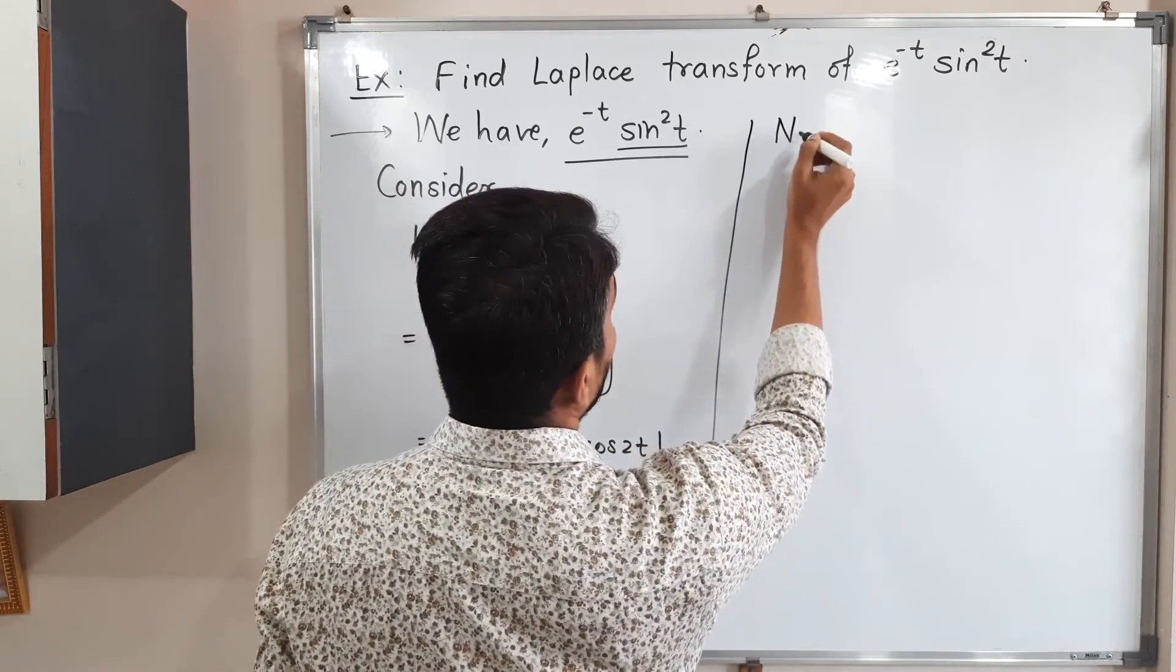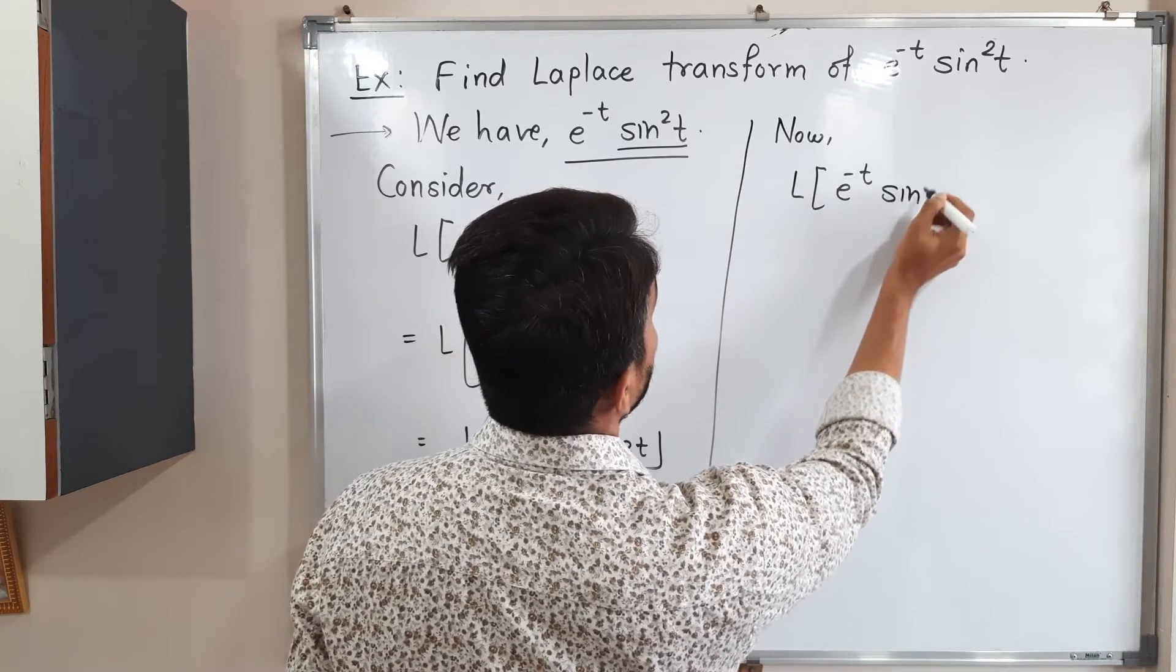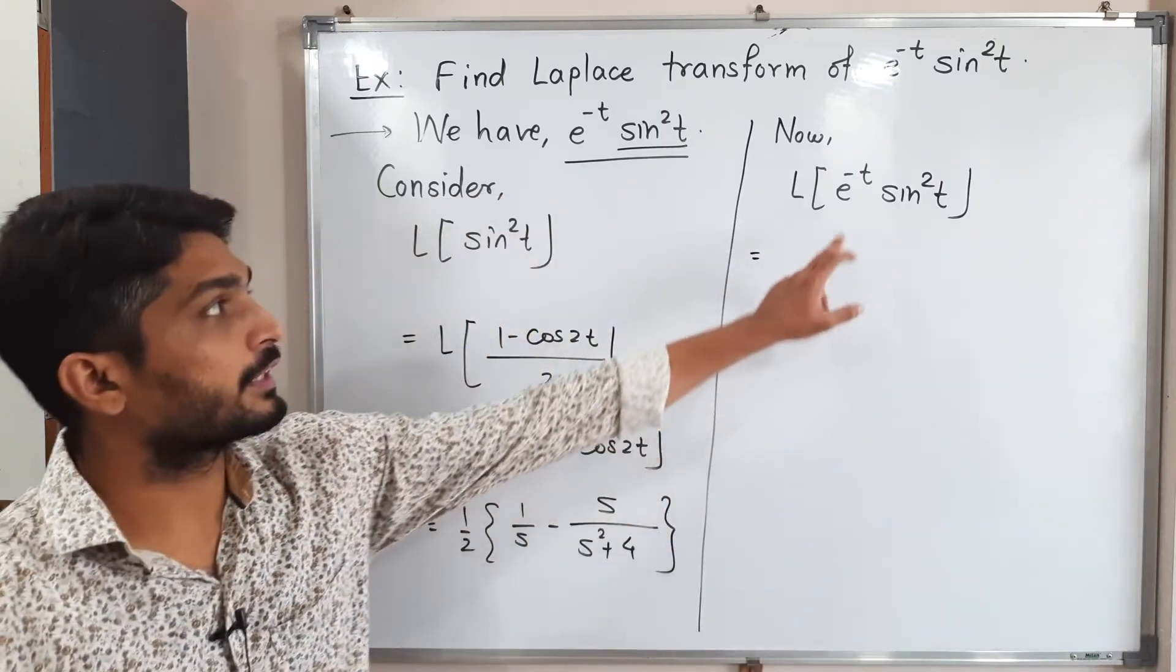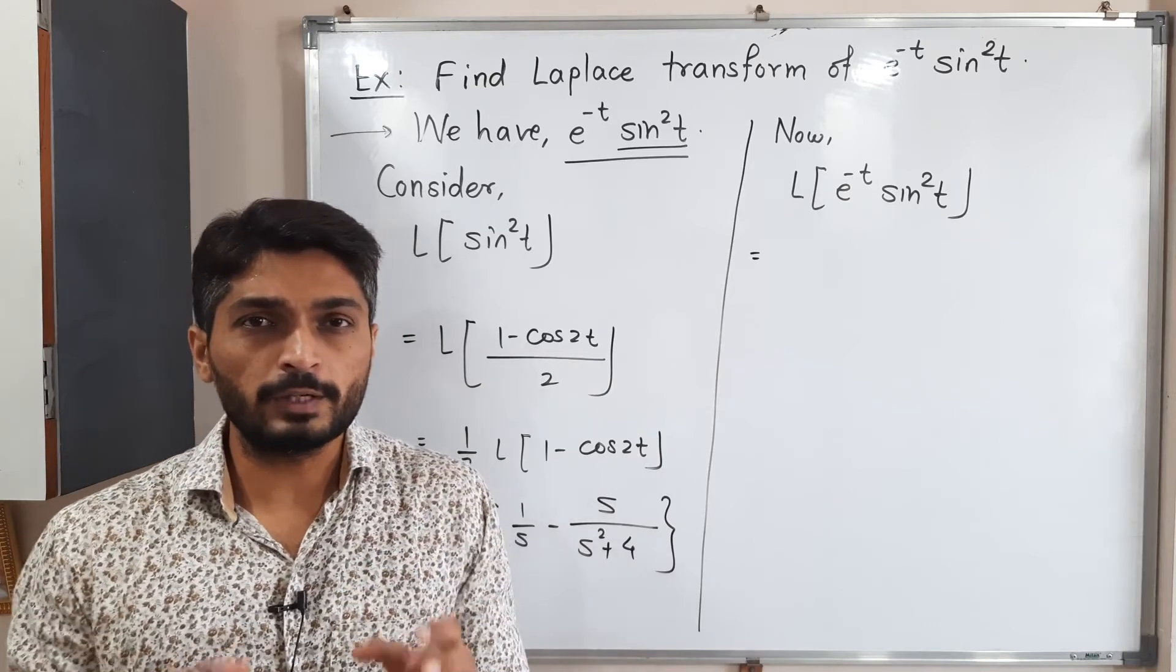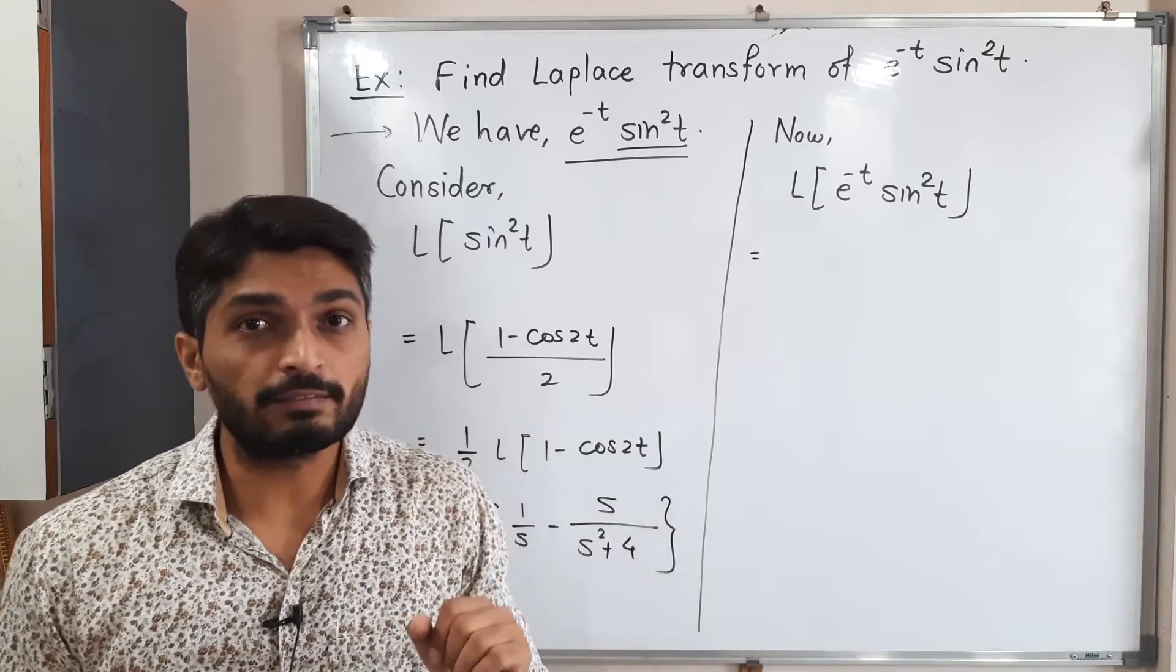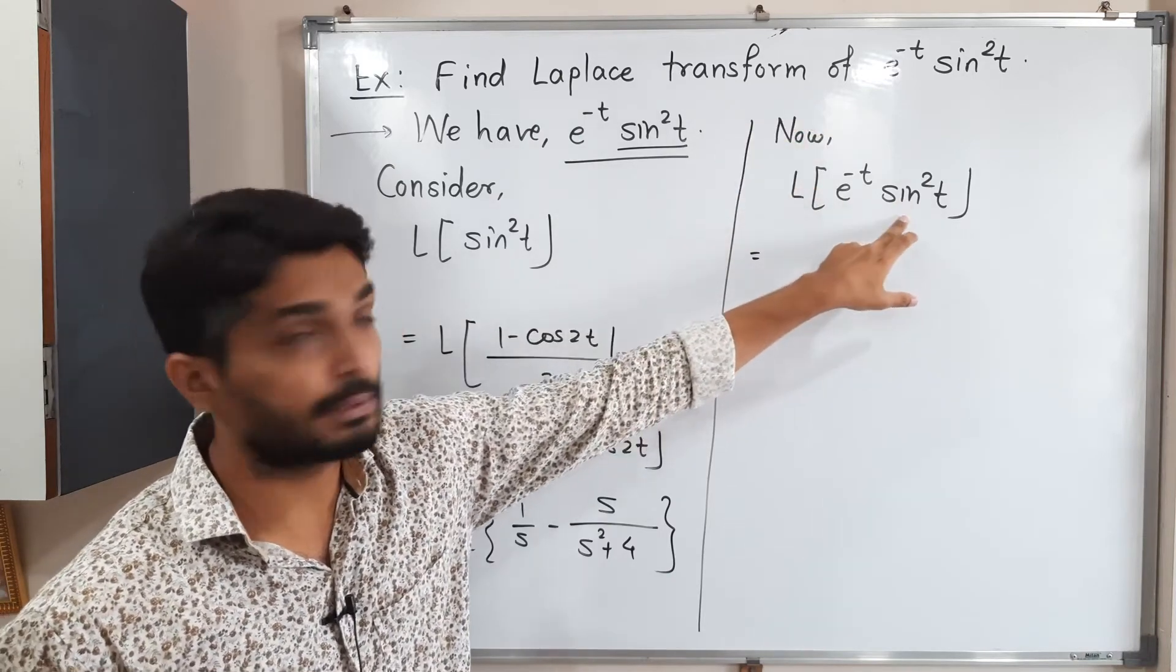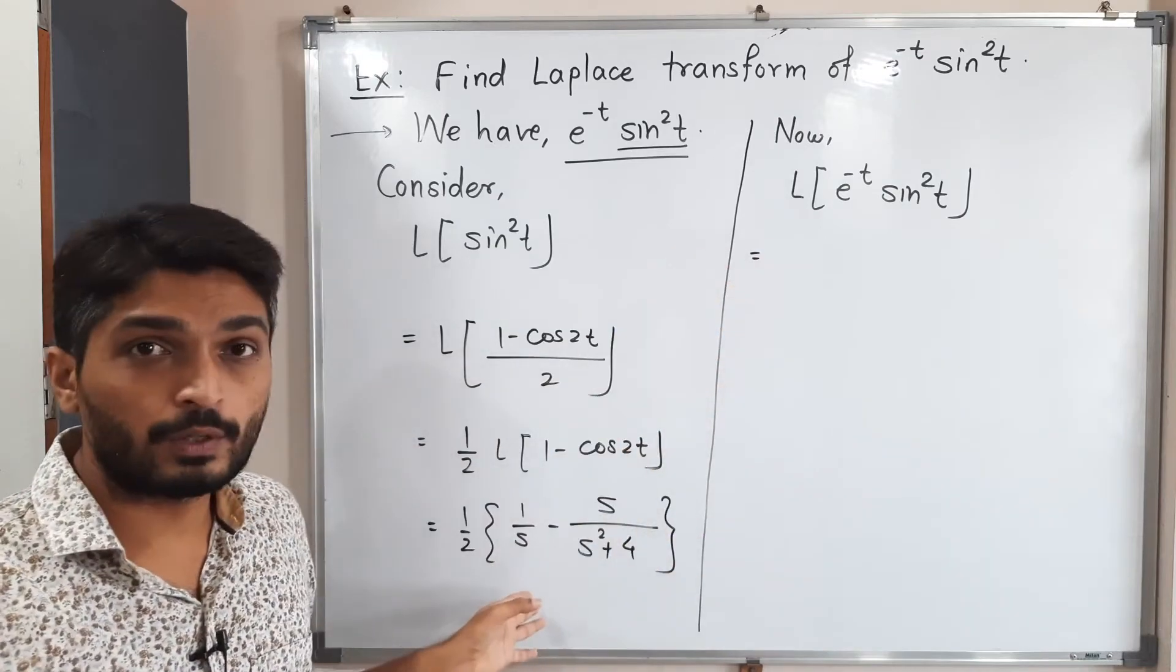Now Laplace of e raised to minus t sine square t. By first shifting theorem, since exponential function is there: in case of first shifting theorem we do not find Laplace. We simply make changes in the Laplace of neighboring function. That means e raised to minus t is there, so it indicates we have to use first shifting theorem. So whatever its neighbor sine square t, we have to make changes in its Laplace. Its Laplace already we have found out.